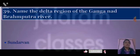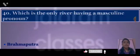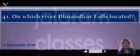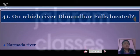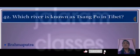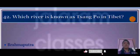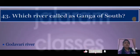Name the delta formed by the Ganga and Brahmaputra rivers. Answer: Sundarbans. Which is the only river having a masculine name? Answer: Brahmaputra. On which river is the Dhuan Dhar waterfall located? Answer: Narmada River.